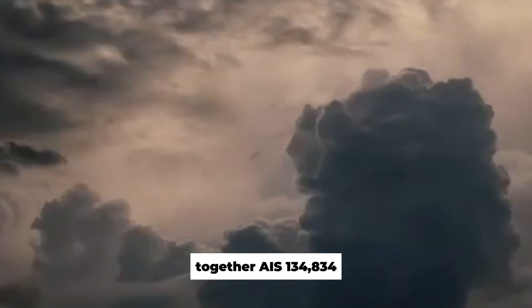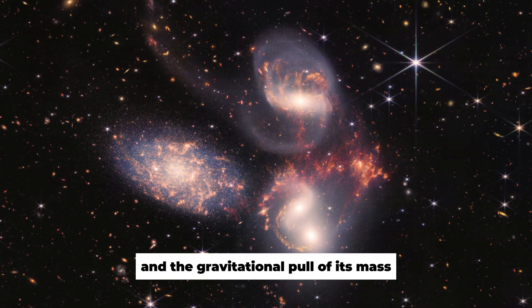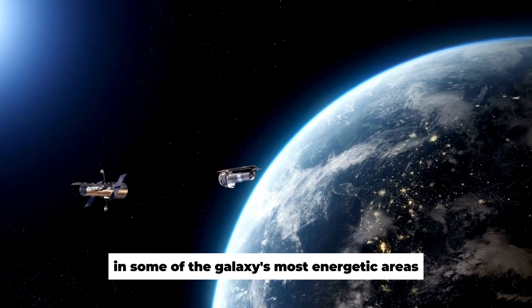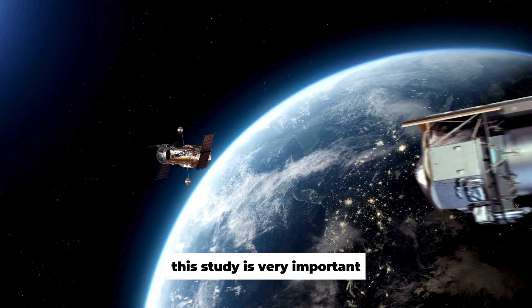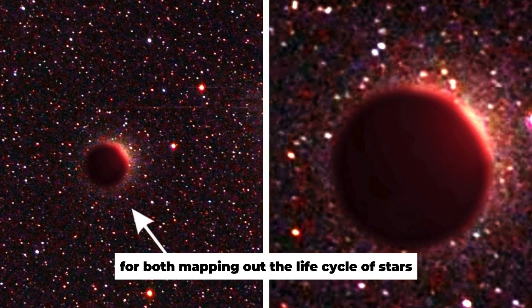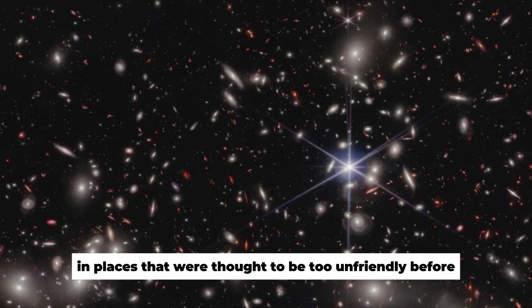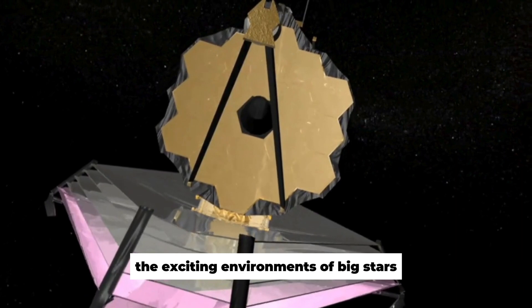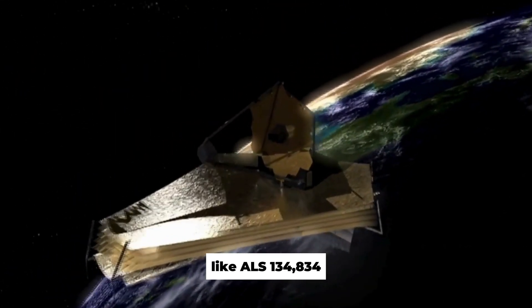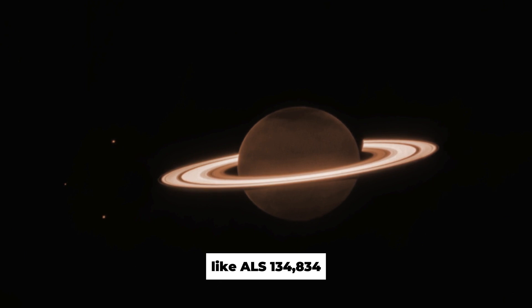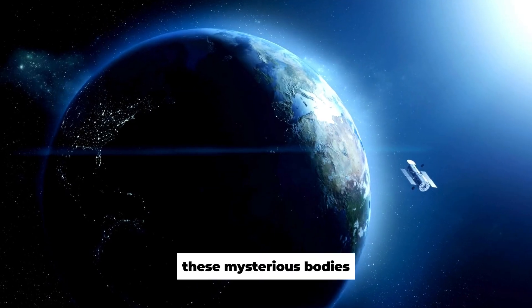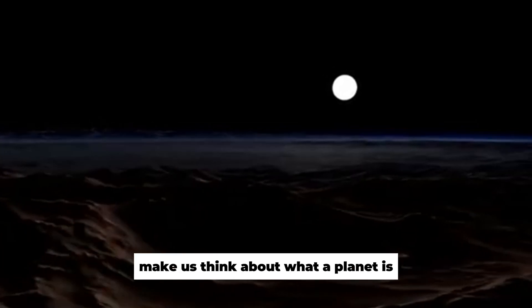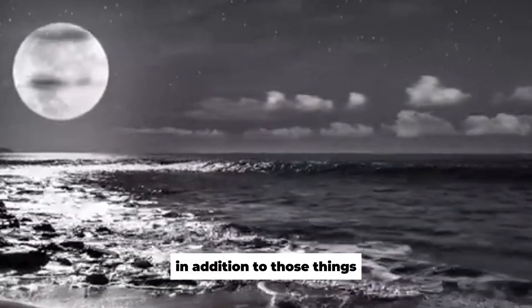IRAS 13481-6124's strong brightness and the gravitational pull of its mass make it a unique place to study how matter acts in some of the galaxy's most energetic areas. This study is very important for both mapping out the life cycle of stars and looking into the possibility of planets forming in places that were thought to be too unfriendly before. Our next topic is rogue planets, which includes both the exciting environments of big stars like IRAS 13481-6124 and the mystery planets that wander the universe. These mysterious bodies, which float in space without a star to orbit around, make us think about what a planet is and where they can live.